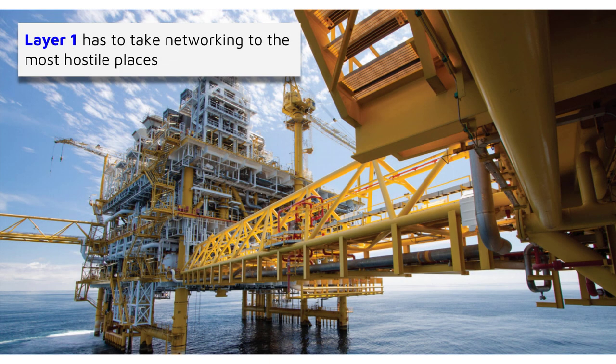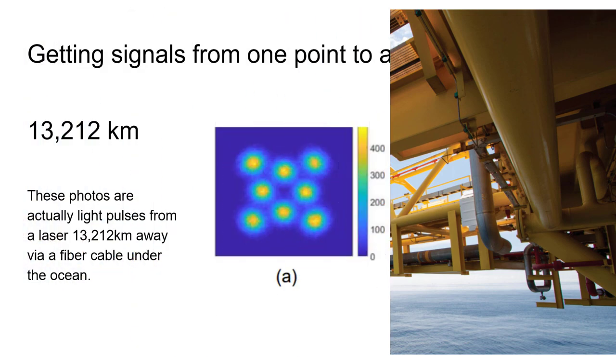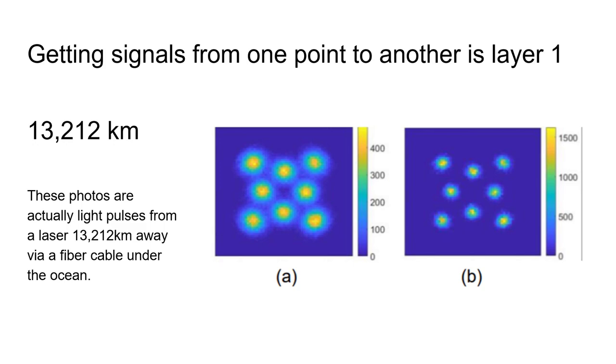This physical layer of the OSI has to take your data to some really hostile places and environments. These photos are actually light pulses from a laser 13,212 kilometers away via a fiber optic cable under the ocean.